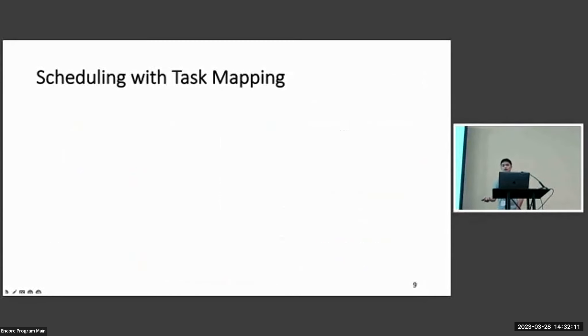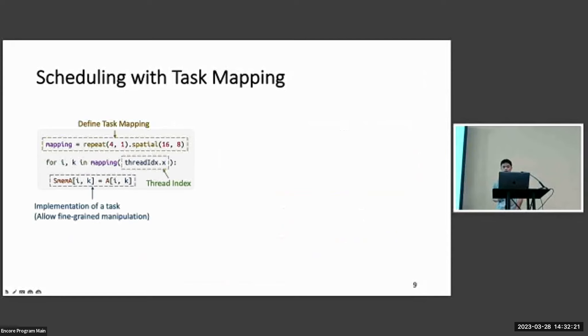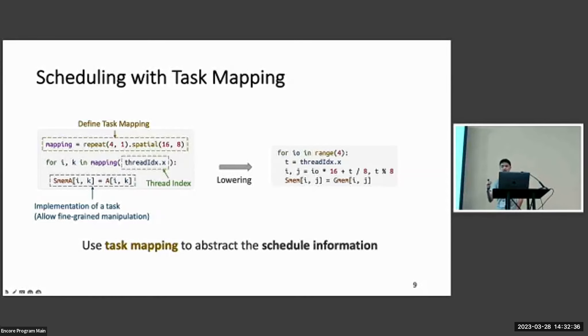To schedule a tensor program with task mapping, we'll first define the task mapping in the tensor program, and we'll give the worker index or thread index to the task mapping, and we will implement each task in the loop body. And here, we allow the fine-grained manipulation of the tensor program. The task mapping contains all the information previously described by the schedule primitives, and now we can lower it to the concrete tensor program.